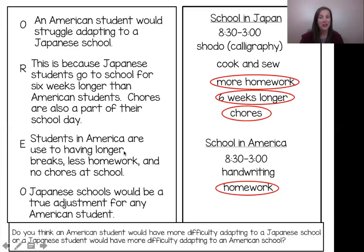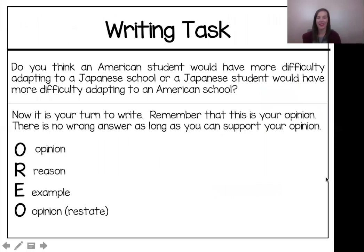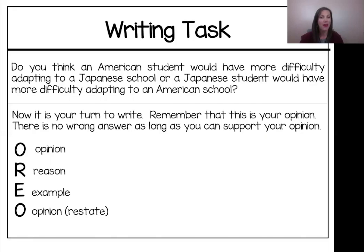Okay guys, now it's your turn. This is your writing task: Do you think an American student would have more difficulty adapting to a Japanese school, or a Japanese student would have more difficulty adapting to an American school? Now is your turn to write. Remember that this is your opinion — there is no wrong answer as long as you can support your opinion. I've included the OREO organizer to help you organize your thoughts. Happy writing!